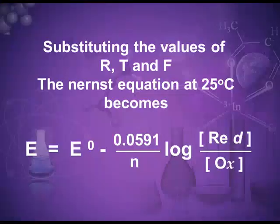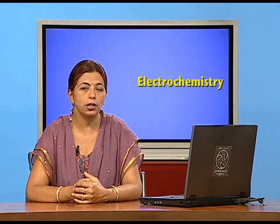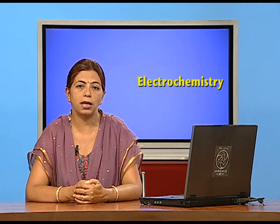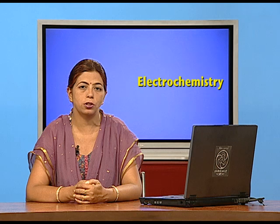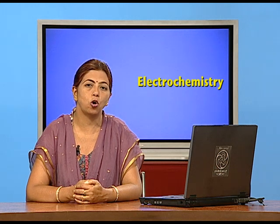When we substitute the values of R, T, n, and F, then we get the Nernst equation as: E equals E naught minus 0.0591 upon n log. The natural logarithm has been changed to base 10. The concentration of the reduced state is divided by the concentration of the oxidized state. This is the equation you can use in numericals, and the value of n will change according to the redox reaction, that is the number of electrons lost or gained.